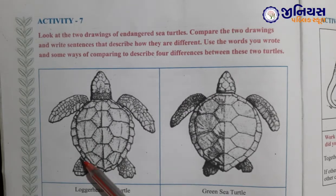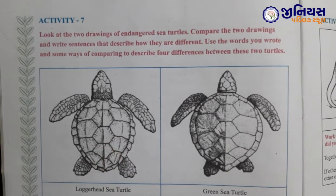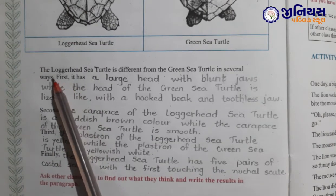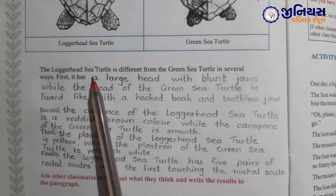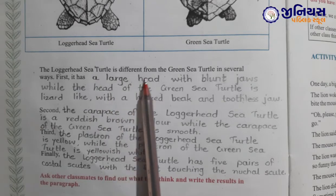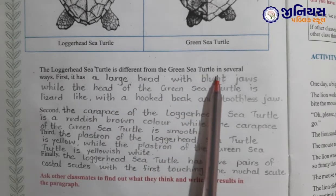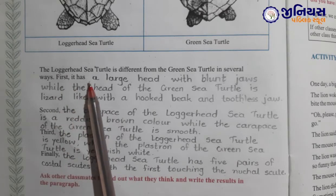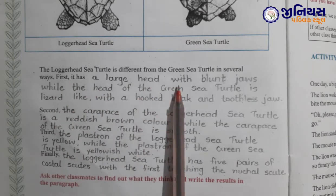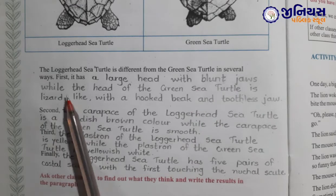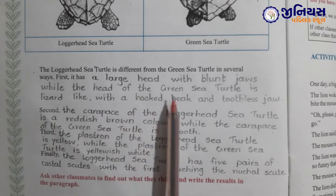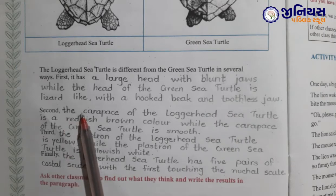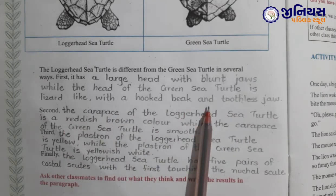So let's see. The loggerhead sea turtle is different from the green sea turtle in several ways. First, it has a large head with strong jaws, while the head of the green sea turtle is lizard-like with a hooked beak and toothless jaw.